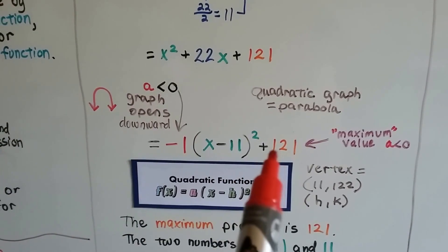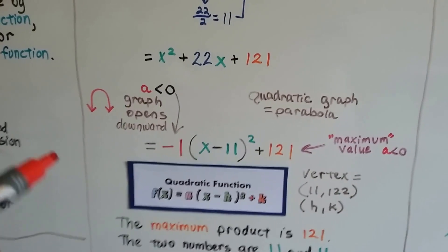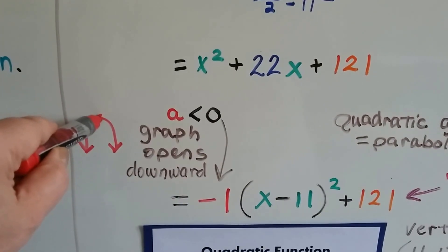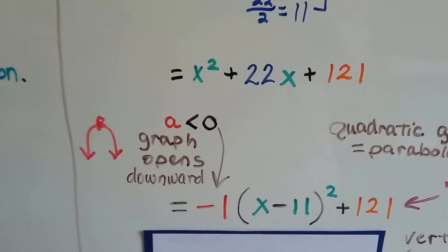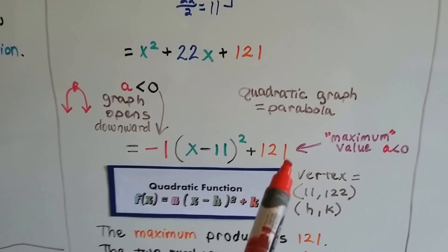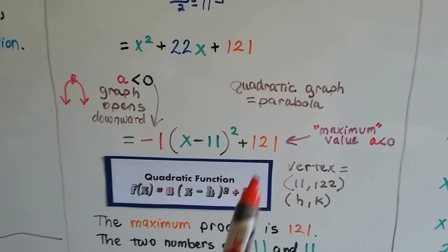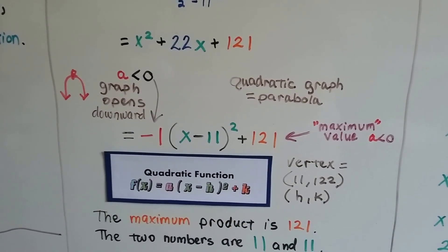Because it's opening downward and our vertex is going to be right up here, it's going to be a maximum value. Our k value, this 121, is going to be our maximum value.